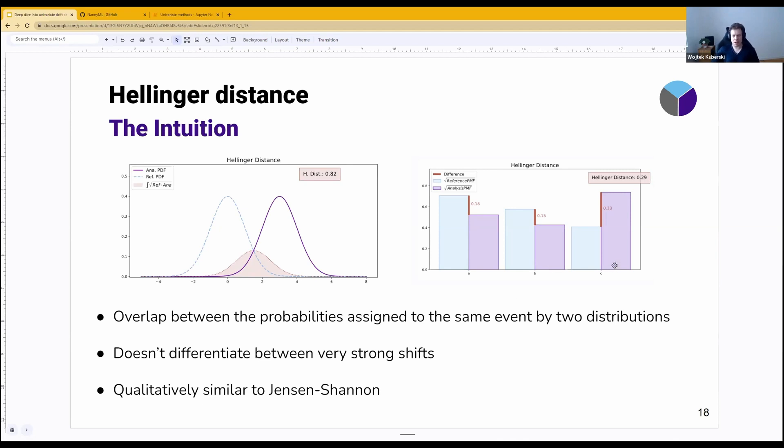Similarly, in terms of categorical features, you basically take the overlap or lack of overlap and look at the distance. This distance then is used to calculate the Hellinger distance.